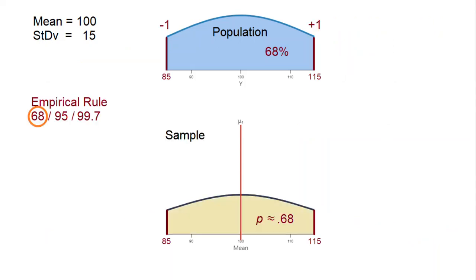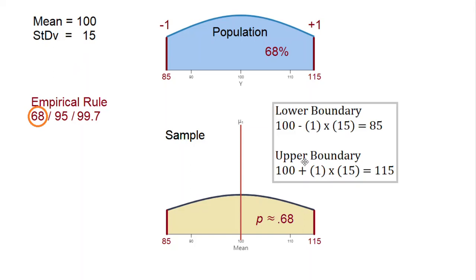Think about the empirical rule. It says that 68% of the population is within one standard deviation. With a mean of 100 and standard deviation of 15, our lower boundary is 100 minus one standard deviation, bringing us to 85, and our upper boundary is 100 plus one standard deviation, bringing us to 115. So between 85 and 115 is 68% of the values. The probability of randomly selecting a value within one standard deviation is approximately 0.68.